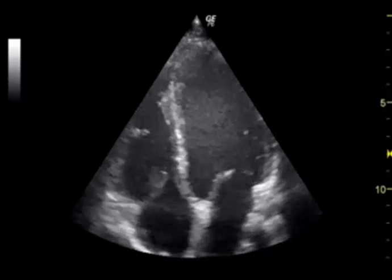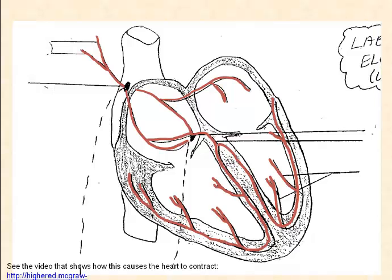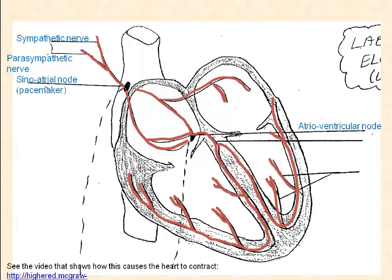The result is a coordinated heartbeat. In this line drawing, you can see all the same parts: the sympathetic nerve and the parasympathetic nerve bringing messages to the SA node, or the pacemaker; the atrioventricular node, which delays the impulse slightly to allow the ventricles to fill; the atrioventricular bundle of His, which runs through the septum; and the Purkinje fibers, which branch into each ventricle to cause the ventricles to contract.